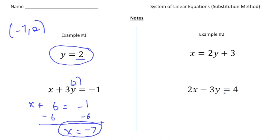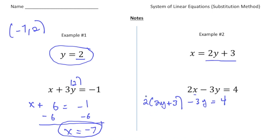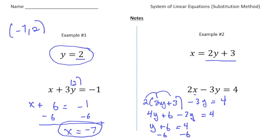Let me show you another one in example number two that's a little more complex. Here we know that x equals 2y plus 3, and then we also have 2x minus 3y equals 4. The nice thing about this problem is we still know what x is — x is 2y plus 3. So I can replace this x with 2y plus 3, rewriting it as 2 times (2y plus 3) minus 3y equals 4. Using the distributive property, that gives us 4y plus 6 minus 3y equals 4, and then y equals negative 2.